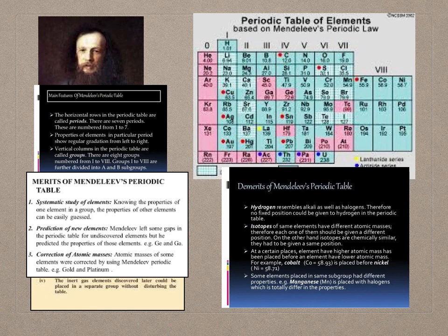Let's see the demerits of Mendeleev's periodic table. Hydrogen resembles both alkali metals and halogens; therefore, no fixed position could be given to hydrogen in the periodic table. Isotopes of the same element have different atomic masses, so each should be given a different position; however, since isotopes are chemically similar, they had to be given the same position — a contradiction that the table could not resolve.